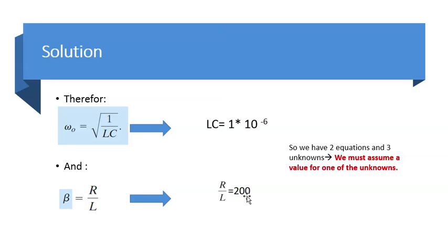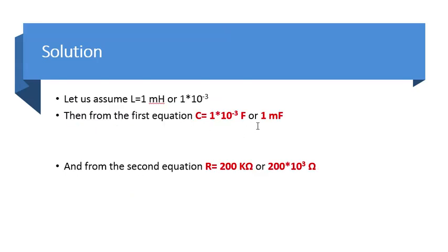If you design a filter that costs $2 million, nobody wants it, right? It has to be a reasonable design. So, that's why I chose 1 millihenry for the value for the L.